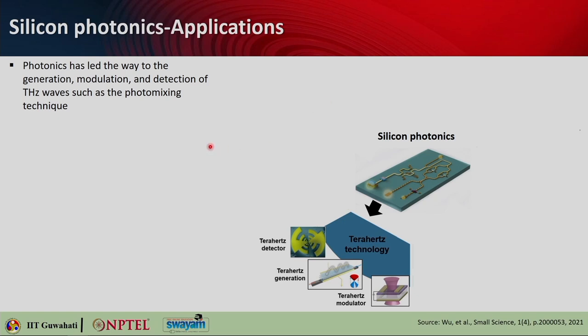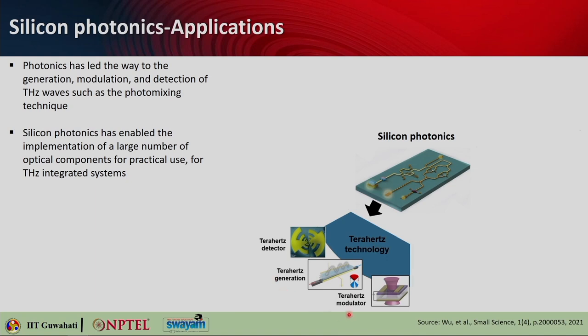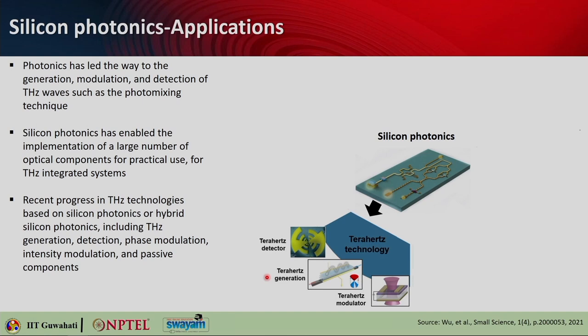Silicon photonics has led the way in generation, modulation, and detection of terahertz waves — the frequency gap between infrared and microwaves — using techniques such as photo mixing. Silicon photonics has enabled implementation of large numbers of optical components for practical terahertz integrated systems. Recent progress in terahertz technologies based on silicon photonics includes generation, detection, phase modulation, intensity modulation, and development of passive components.